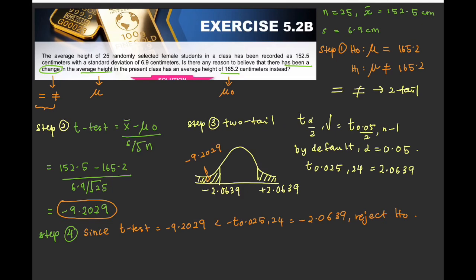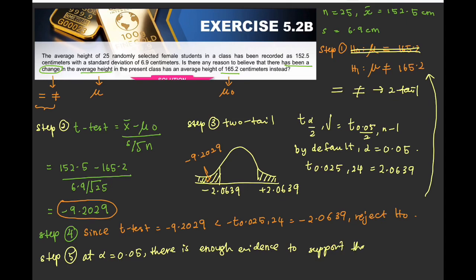So what happened if you reject H null? So look back here. Your step one. You reject this H null. So mu is not equal to 165.2. So there has been a change in the average height. So step 5 at alpha 0.05. There is enough evidence to support that there has been a change in the average height.